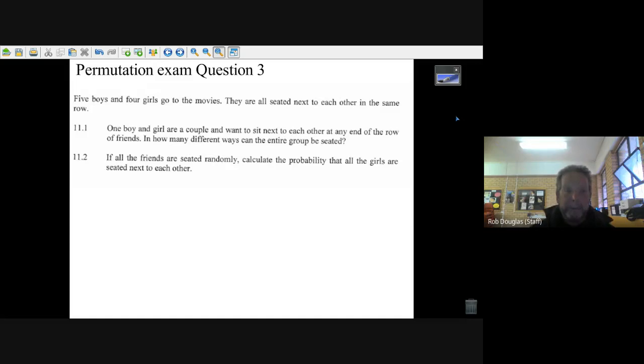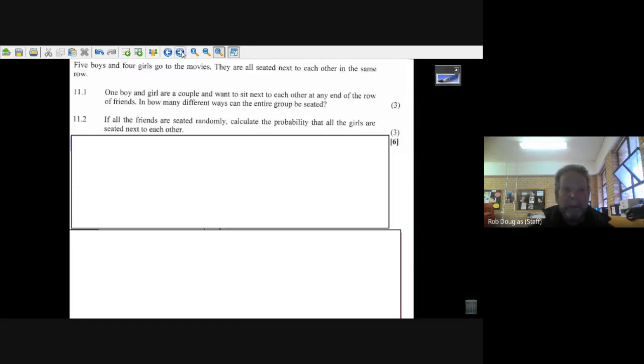Okay, this is the third permutation exam question. Here's the story: there are five boys and four girls and they go to the movies and they're all seated next to each other in the same row, but one boy and a girl are a couple and they want to sit next to each other at the end of the row of friends. In how many different ways can the entire group be seated?